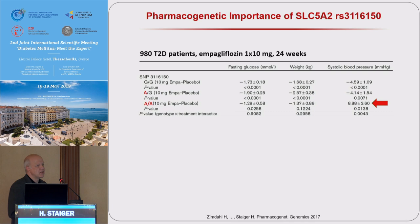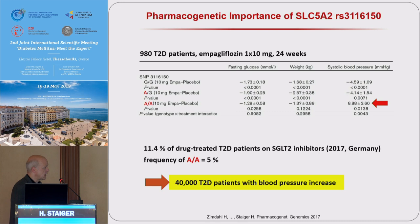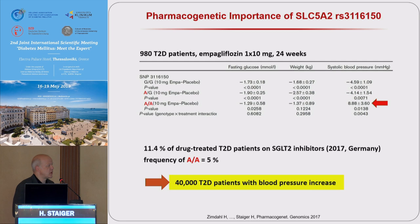The same SNP was associated with increased fasting glucose and increased systolic blood pressure. In this pool, patients were treated with empagliflozin for 24 weeks. There was no effect of this genotype on the reduction in fasting glucose and no impact on weight loss. But there was a very exciting increase in blood pressure — usually blood pressure decreases during treatment, but in this subgroup we have a marked increase of nearly 10 mmHg. If we calculate that about 11.4% of drug-treated type 2 diabetic patients are currently on SGLT2 inhibitors in Germany, and the genotype AA has a frequency of 5%, then about 40,000 type 2 diabetic patients should show blood pressure increase during SGLT2 inhibitor treatment.